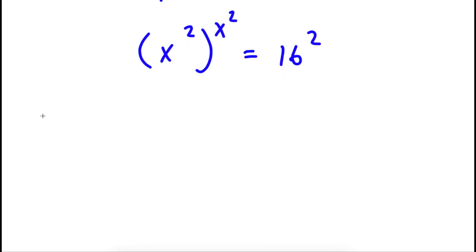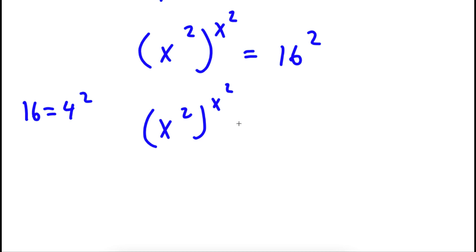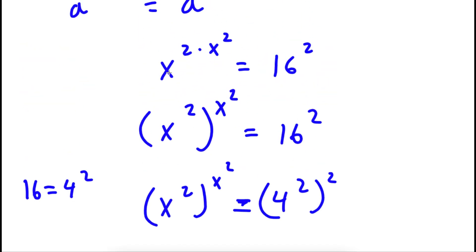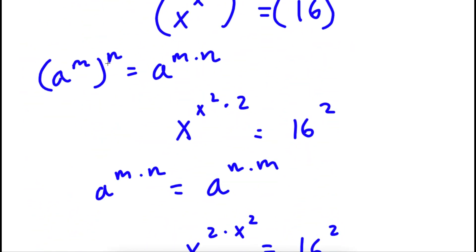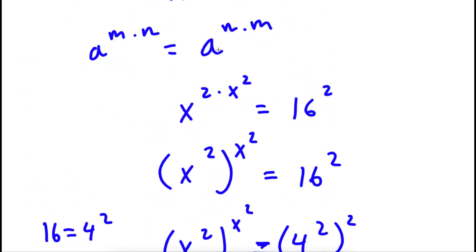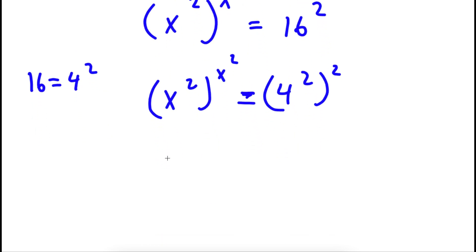Now, 16 is the same thing as 4 squared. So I can rewrite 16 as 4 to the power of 2. Now, remembering that a to the power of m to the power of n equals a to the power of m times n, 4 to the power of 2 to the power of 2 equals 4 to the power of 2 times 2, which is the same thing as 4 to the power of 4.